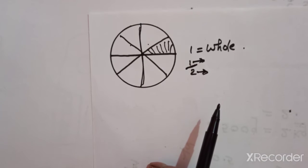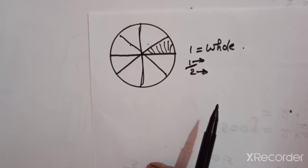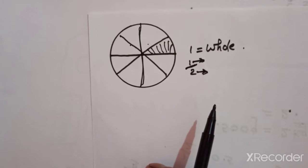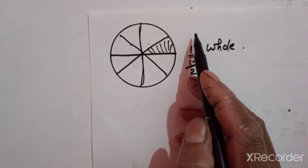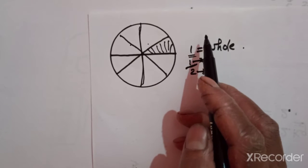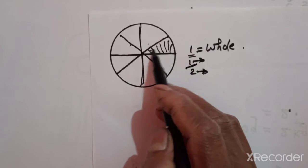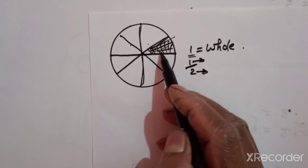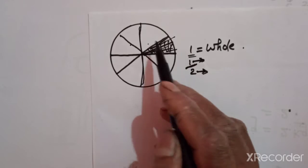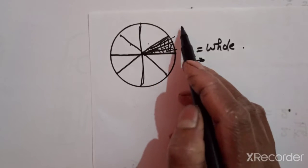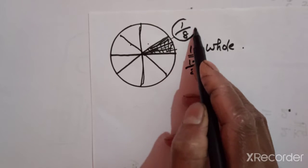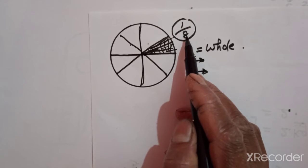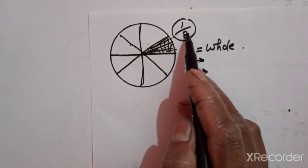A proper fraction always shows a number less than one — greater than zero but less than one. We have not taken zero, we have taken some part of the object, but not the whole. So here it is one upon eight. This fraction is always greater than zero and less than one.